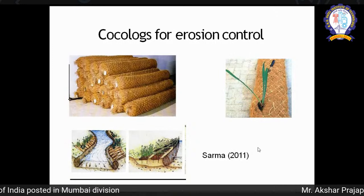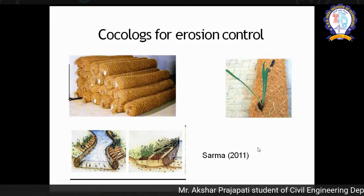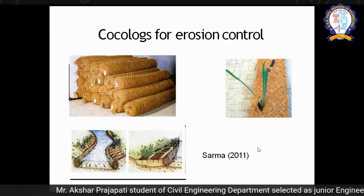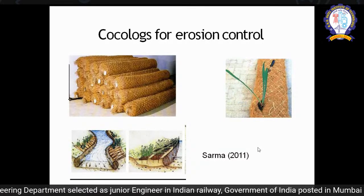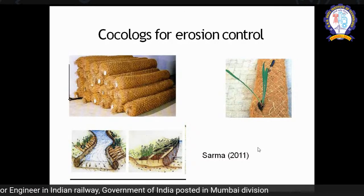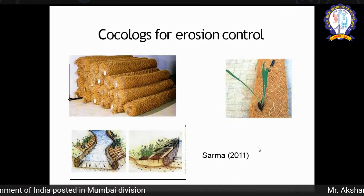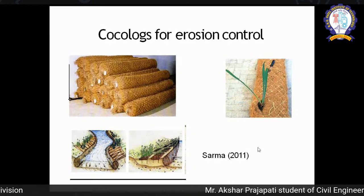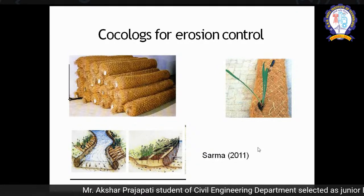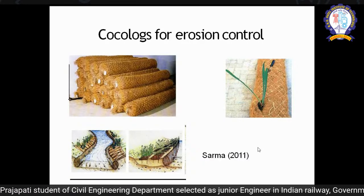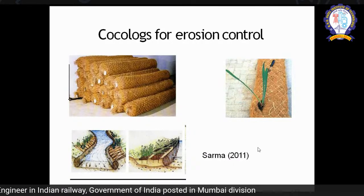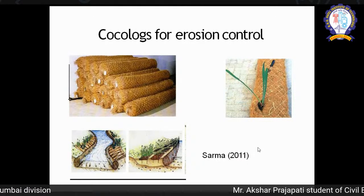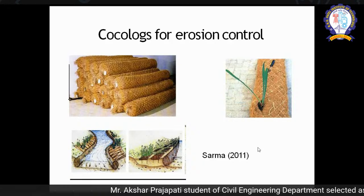This is called Cocolock. Cocolock is a material made from natural geosynthetics, used for river bank protection. In the mountains, there is erosion of river banks and flooding problems. You can place these Cocolocks near your river banks. The advantage is that it promotes mulching action — allowing vegetation to grow inside it. On the right side of the image you can see that vegetation easily grows within the Cocolock. This work was done by Sharma in 2011, and such reference papers can also be studied for better understanding of modern techniques.